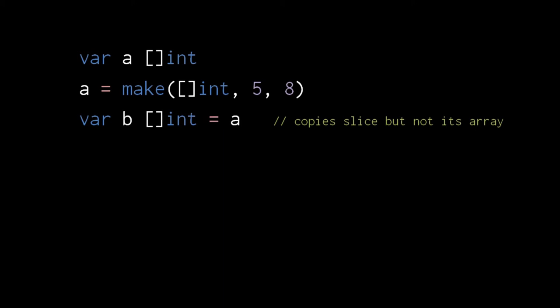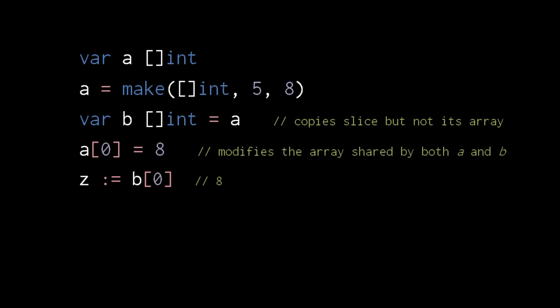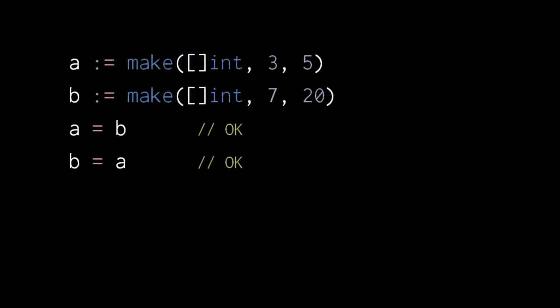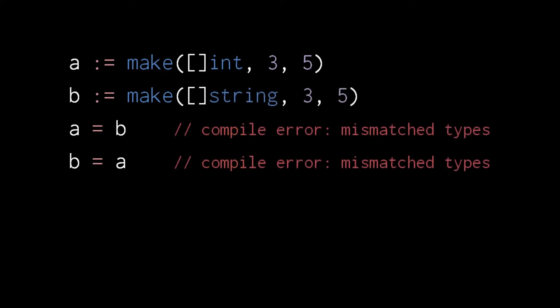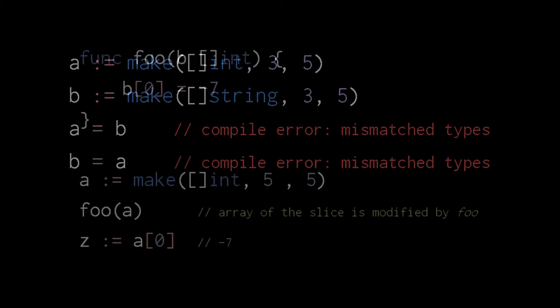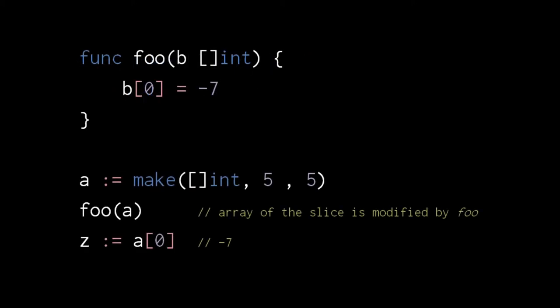If we create a second slice of ints, variable b, we can assign a to b. But be clear that this only copies the slice value, not the array referenced by the slice. Because a and b both reference the same underlying array, accessing indexes through either a or b accesses the same storage. Here assigning 8 to index 0 of a also effectively assigns 8 to index 0 of b. Slices with different lengths and capacities are still considered the same type, so we can assign slice b to slice a and vice versa. Slices with different underlying types however are not considered the same type. When a function takes a slice parameter, the parameter receives a copy of the slice value, not the underlying array. So when we pass the slice to function foo, the parameter b points to the same underlying array as a, and so assignments to the slice in foo affect a.